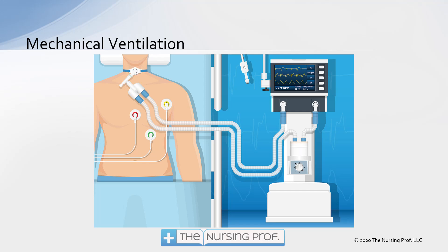First of all, understanding what the ventilator is and what it does. We have this machine over here in this diagram on the right-hand side and then the patient on the left. You can see there are two tubes that go from the machine over to the patient. One of them is the inspiratory limb which provides the air to the patient, and then we have the expiratory limb allowing the patient to exhale back through the machine. It's important that we're having the patient exhale back through the machine so we can monitor how much air is going in and how much air is coming out. Notice that those are two separate tubes going to and from the patient until we get down to the patient's endotracheal tube, which then goes down into the patient's trachea.